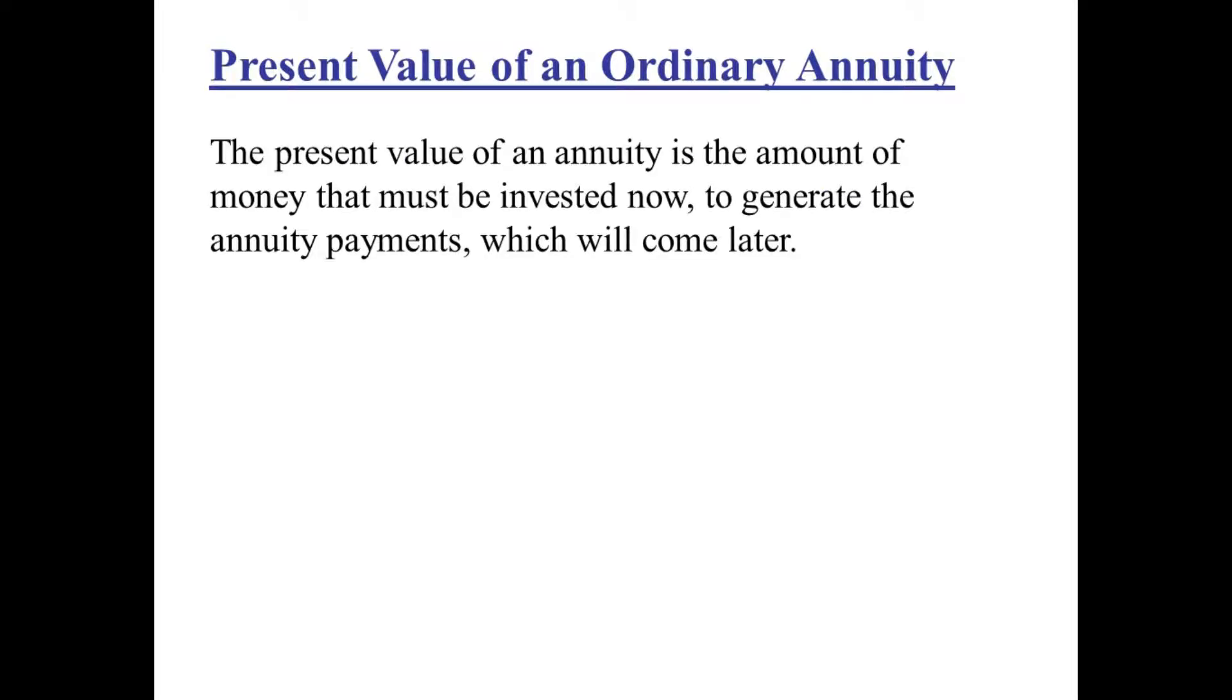The present value of an annuity is the amount of money that must be invested now to generate payments, payments that will come afterwards. So money must be invested now, a lot of it, and then like a trickle, the payments are made and the payments will come later.